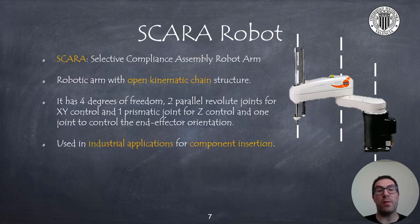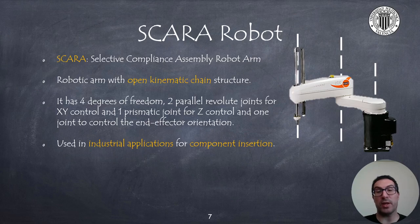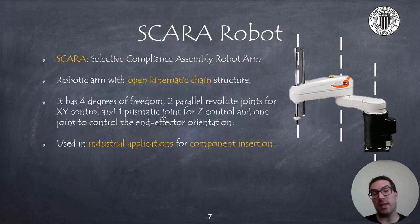The SCARA robot, which stands for Selective Compliance Assembly Robot Arm, is a robot used in industrial applications for component insertion. It is an open kinematic chain robotic arm and has four degrees of freedom with two parallel axis revolute joints that allow X-Y control and a prismatic joint. It also has a revolute joint to control the orientation of the end effector and tool.